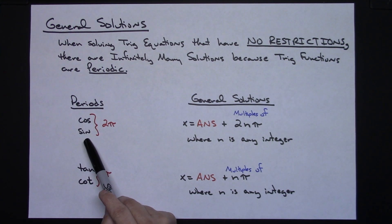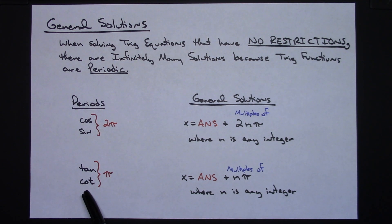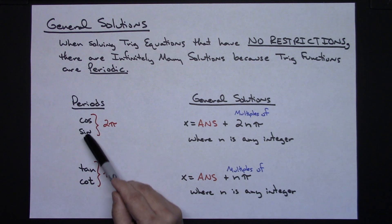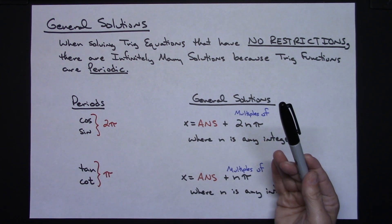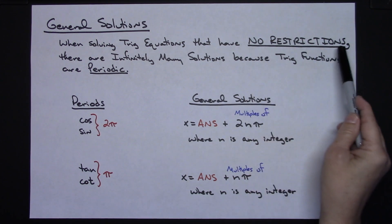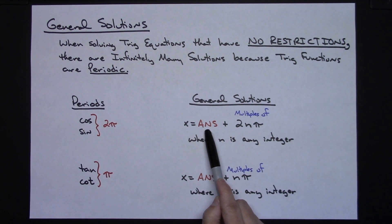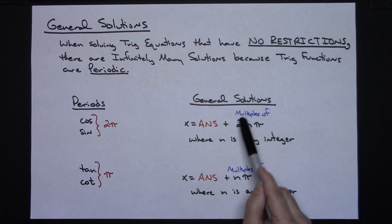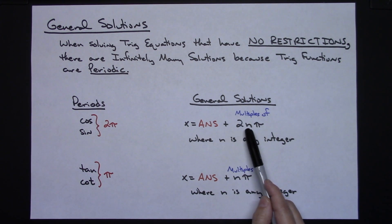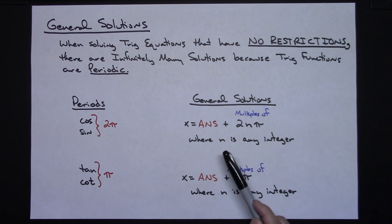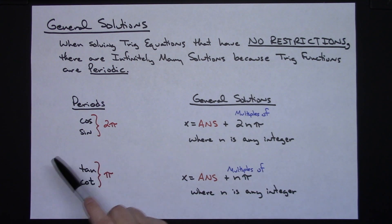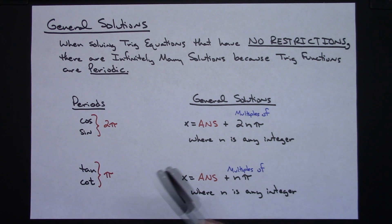Cosine and sine have a period of 2π; tangent and cotangent have a period of π. For every cosine and sine equation where there are no restrictions — meaning they want all possible answers — you write a general solution. You calculate one numerical answer and then add multiples of the period: plus 2nπ, where n is any integer (zero, one, two, three, and so forth), to capture answers in all periods.